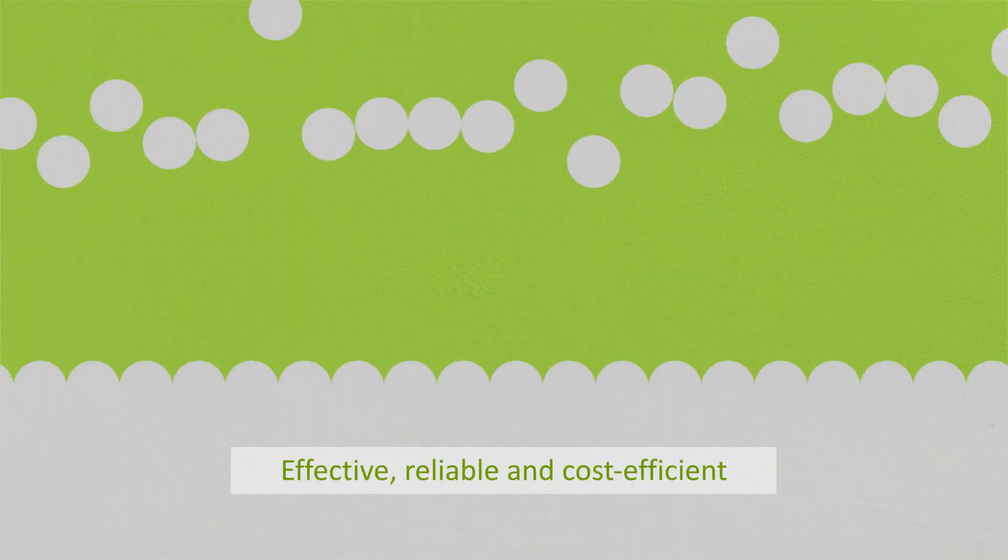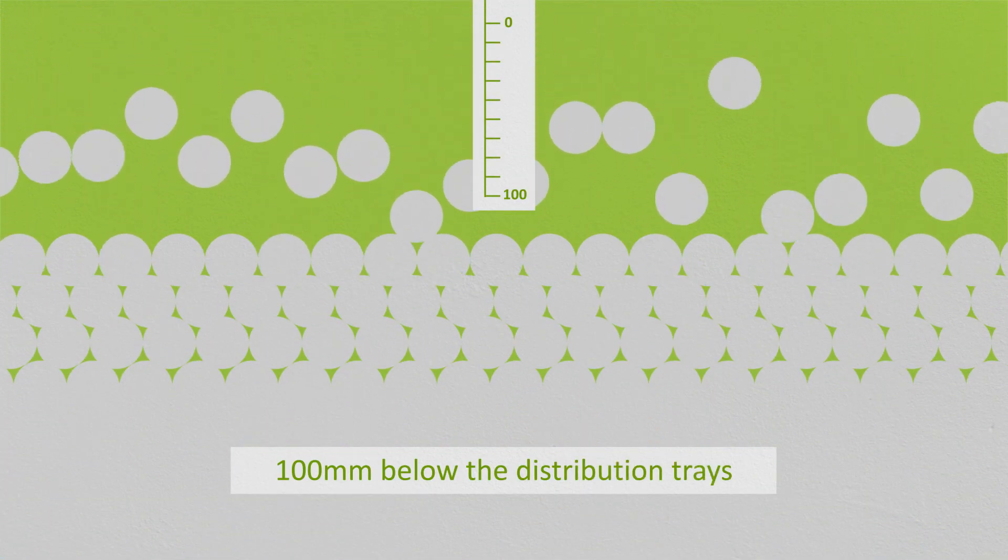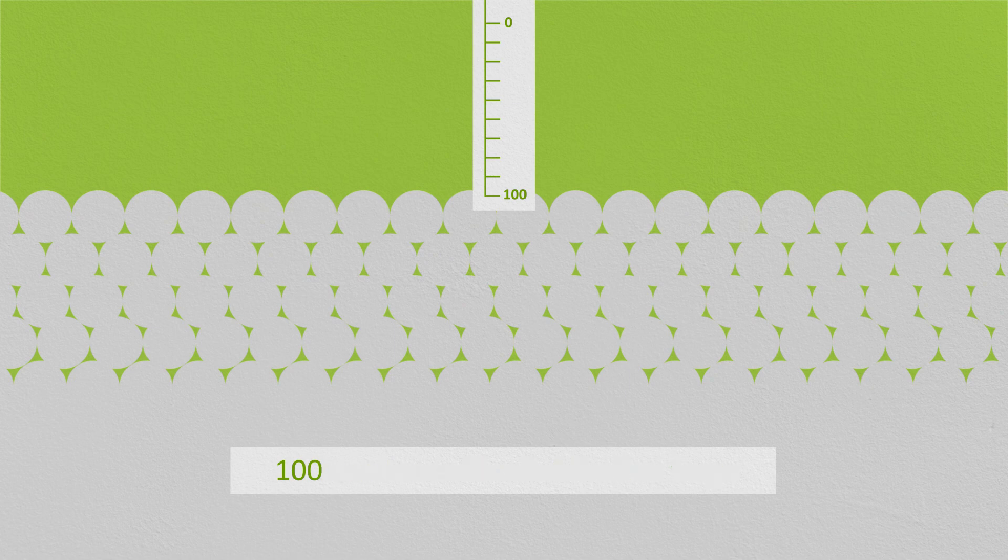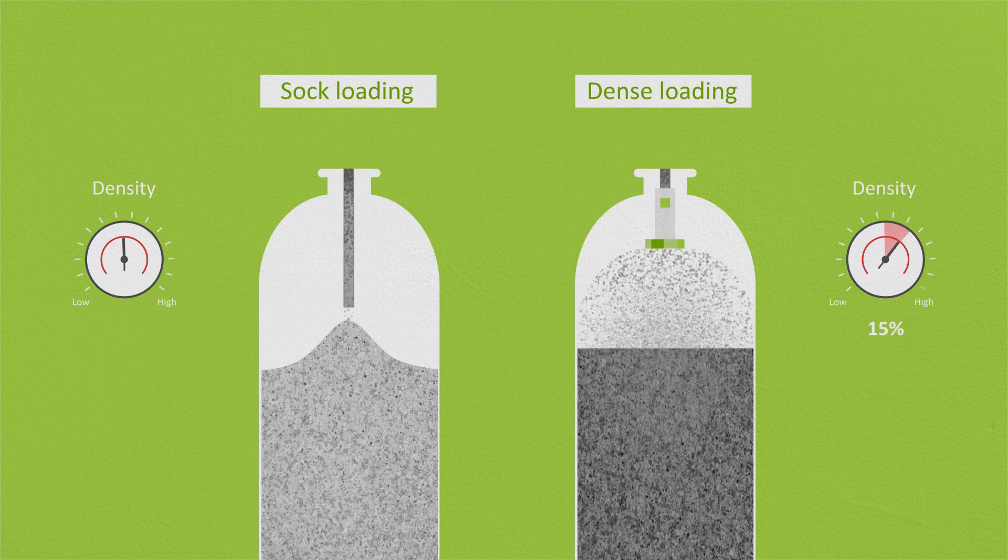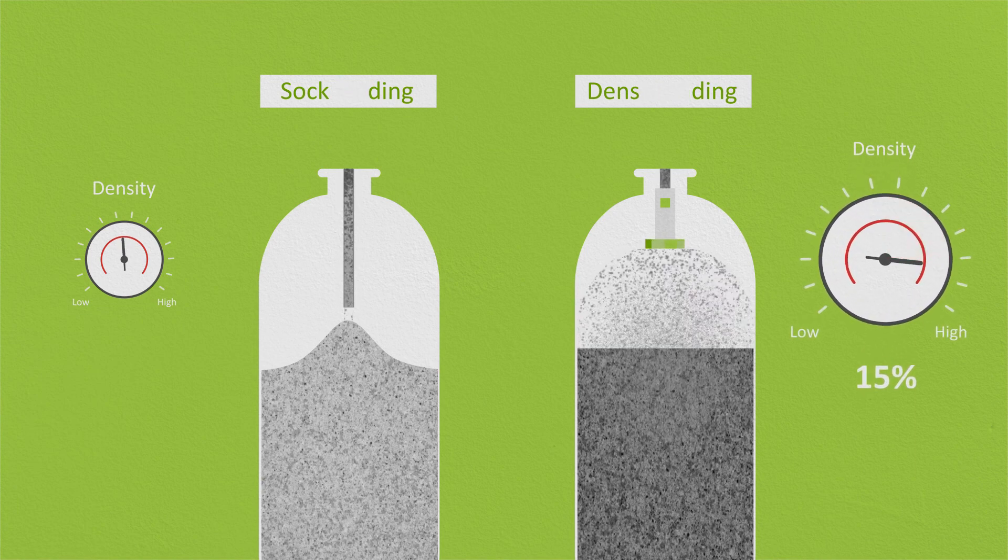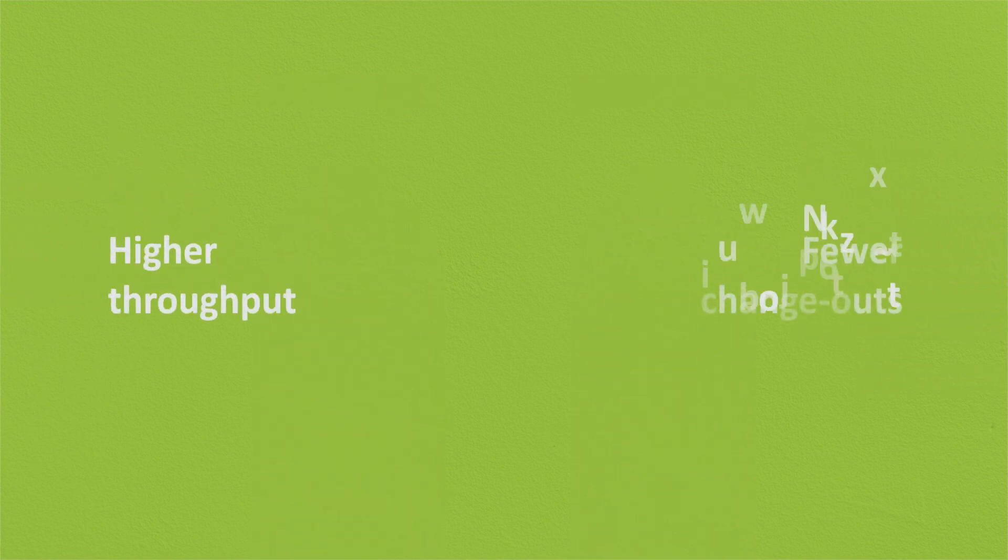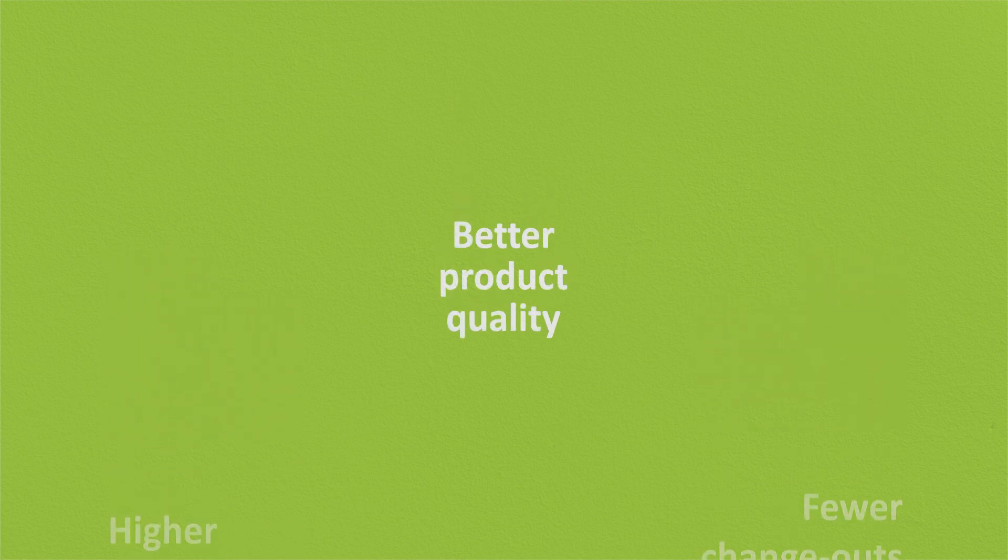Effective, reliable and cost-efficient, it loads vessels up to 100 millimeters below the distribution trays and routinely improves densities by 15%. For higher throughput, fewer changeouts and better product quality, specify CR3's dense loader for your next catalyst replacement.